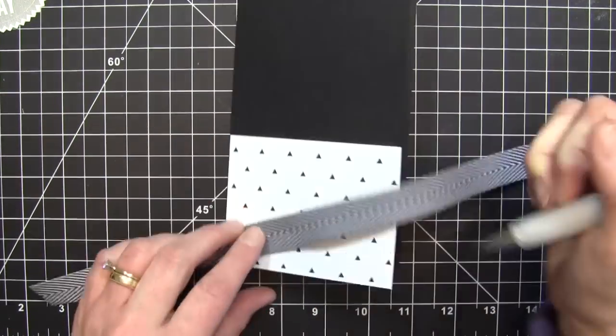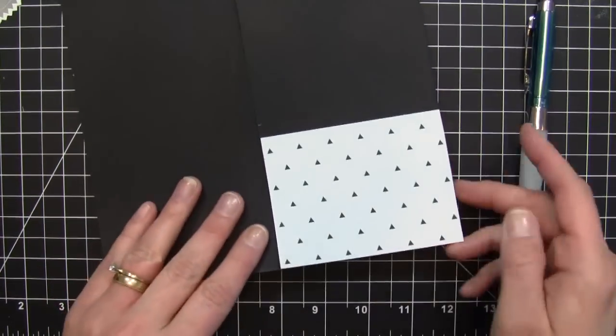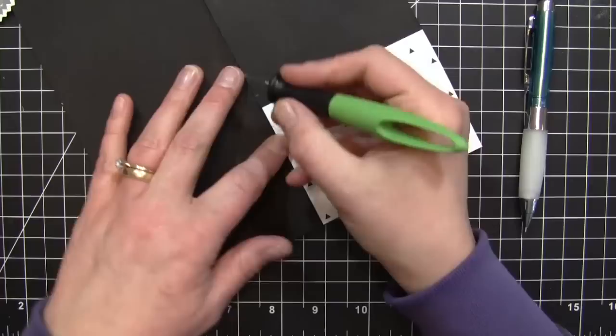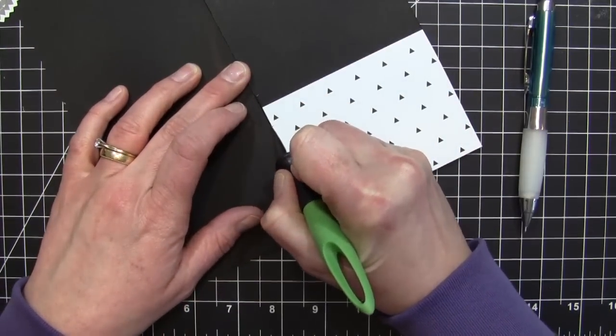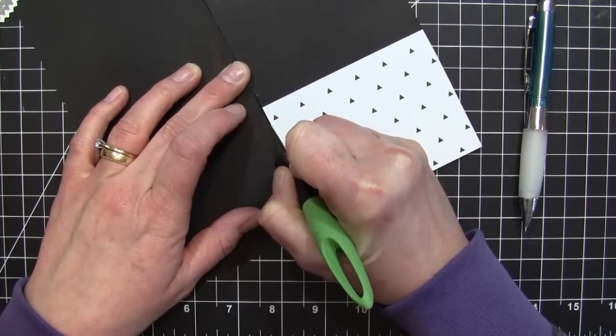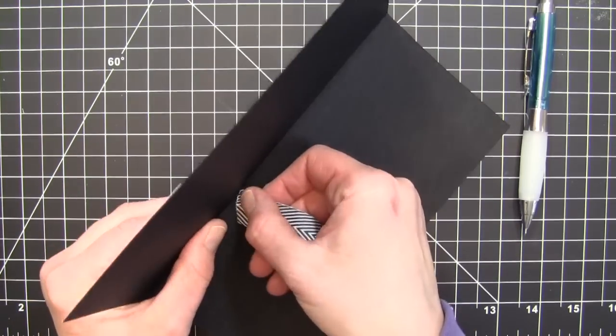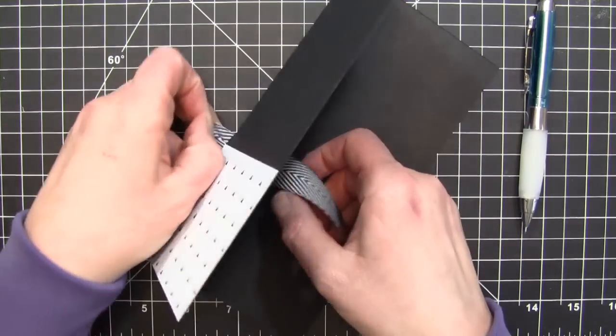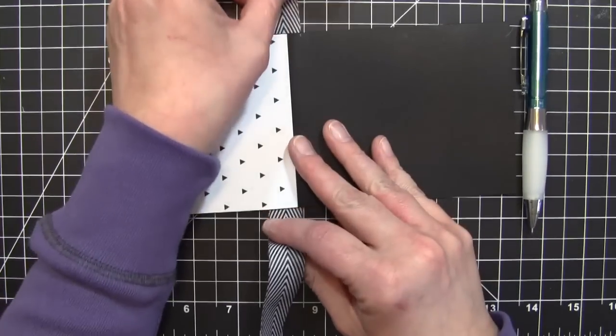Using some black chevron ribbon, I'm marking my area where I want my ribbon to come through. Then I'm taking an Exacto knife and cutting a little slit right into the fold of the card so I can run my ribbon through that fold. I'm just sticking it in and running it through, then tying a simple knot around the front of my card.